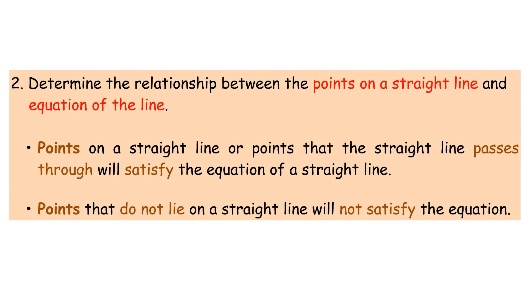2. Determine the relationship between the points on a straight line and the equation of the line. Points on a straight line, or points that the straight line passes through, will satisfy the equation of a straight line. Points that do not lie on a straight line will not satisfy the equation.